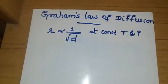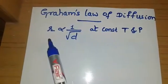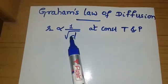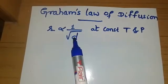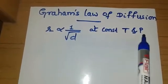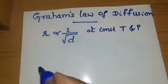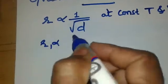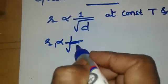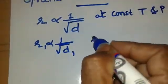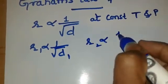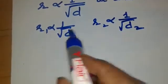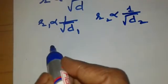Graham found experimentally that the rate of diffusion of a gas is inversely proportional to the square root of its density at the given temperature and pressure. So for two different gases, we can write R1 inversely proportional to square root of d1, and R2 inversely proportional to square root of d2. From these two equations, we can write one more equation.